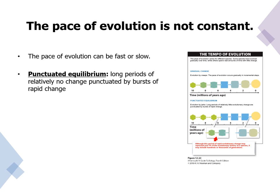Evolution can be fast and it can be slow. Scientists refer to fast and slow evolution in two ways: evolution by creeps, which is gradual increments or steps of evolution; and evolution by jerks — long periods of relatively little evolutionary change that are punctuated by bursts of rapid change, known as punctuated equilibrium.